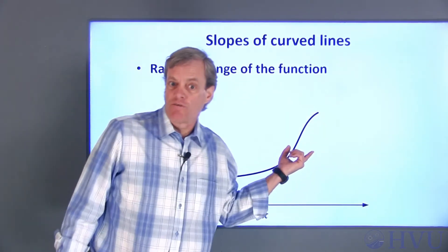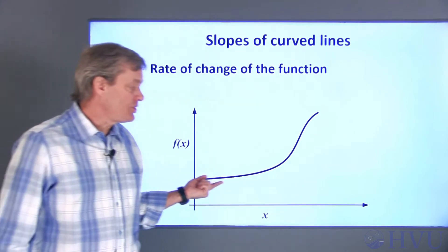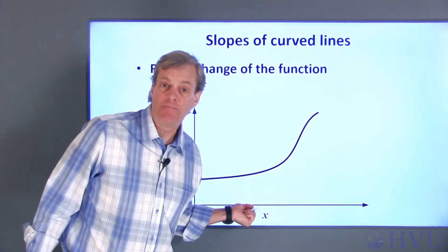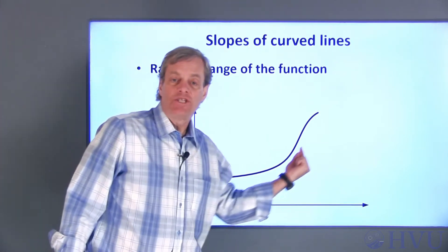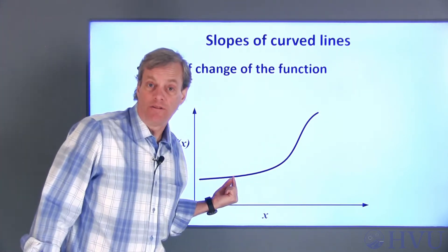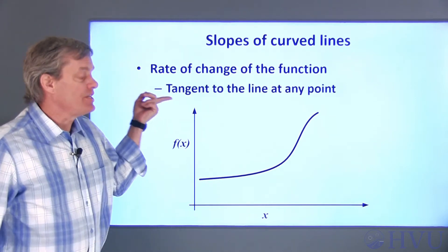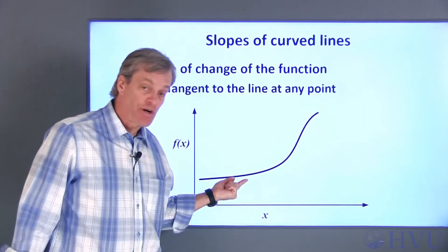The slope of a curve is the rate at which the function is changing with respect to some independent variable x. However, this rate changes depending on where on the curve you measure it. The rate of change is always tangent to the curve.